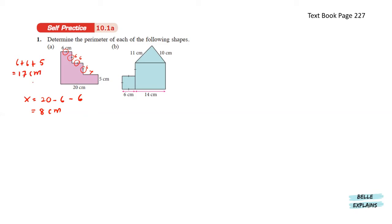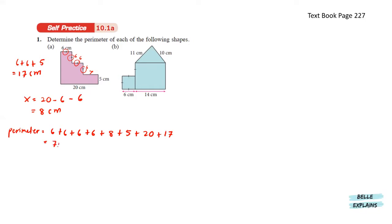Now that we know all the sides, we can calculate the perimeter of the shape. The perimeter equals to 6 plus 6 plus 6 plus 6 plus 6 plus 8 plus 5 plus 20 plus 17. This will give us the perimeter of 74 centimeters.